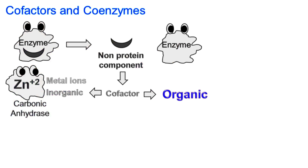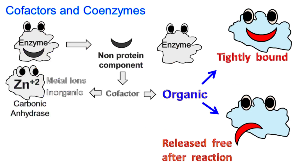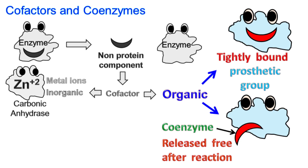The organic cofactors can either be tightly bound with an enzyme or released free after the reaction is complete. The tightly bound organic cofactor is called a prosthetic group, whereas the organic cofactor that is released after catalysis is called a coenzyme.